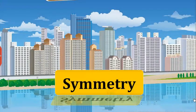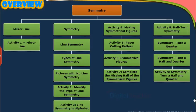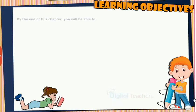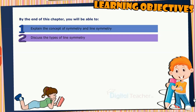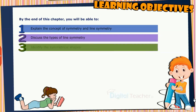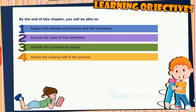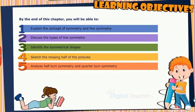Welcome to the Chapter Symmetry. This slide presents the overview of the chapter. By the end of this chapter, you will be able to explain the concept of symmetry and line symmetry, discuss the types of line symmetry, identify the symmetrical shapes, sketch the missing half of the pictures, and analyze half-turn symmetry and quarter-turn symmetry.